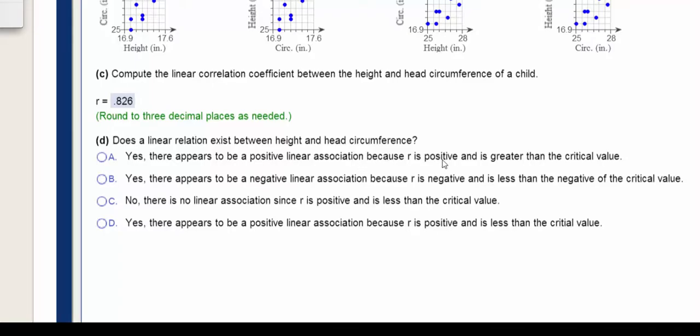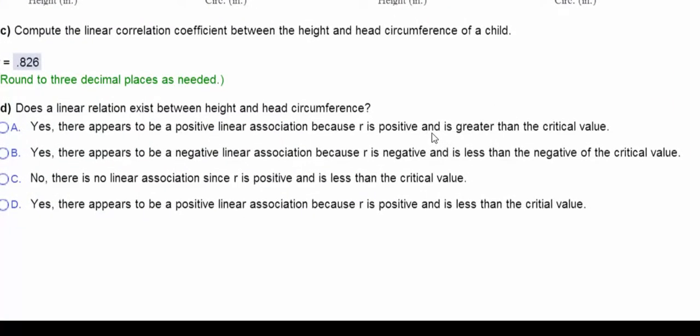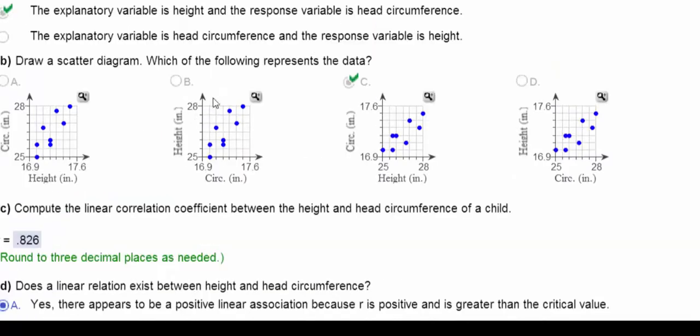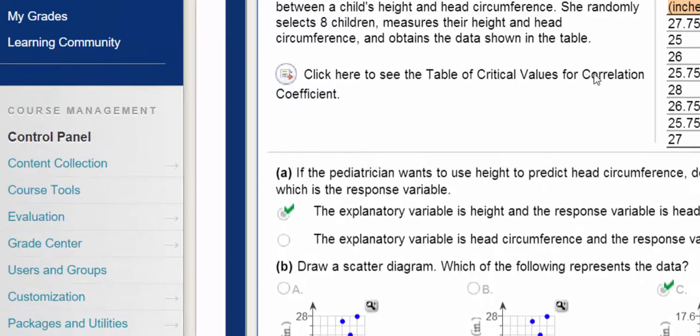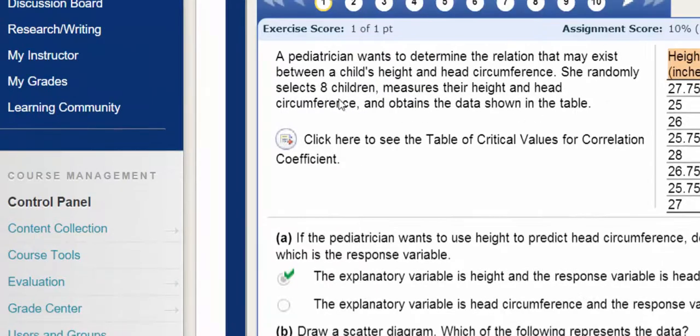And then it does ask me about the positive and greater than the critical value. Let's take a look at the critical values. We were given that here. Click this table to see the critical values for correlation. I think we had eight children.